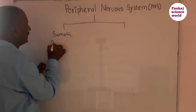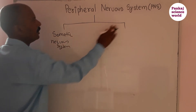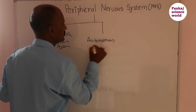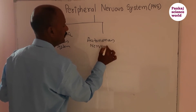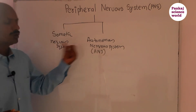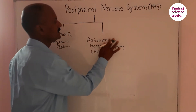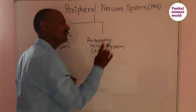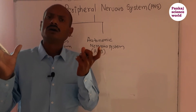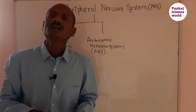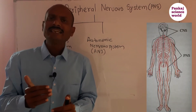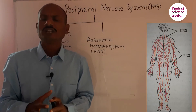The first part is called the somatic nervous system, and the second part is the autonomic nervous system. The somatic nervous system includes the nerves connected to organs that perform voluntary functions. Therefore, the somatic nervous system is related with the voluntary activities of our body.